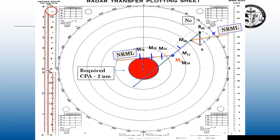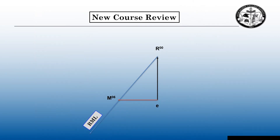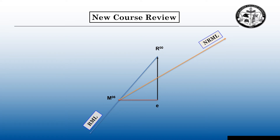Also, where that new CPA is would allow us to come back onto our original course. Here's a bigger picture of this course change: we're going to parallel or transfer our new relative motion line from MX to M06 and draw that new relative motion line out to starboard. With our compass, we're going to stab E and swing R00 to starboard where it touches that new relative motion line — that's our R prime. The original course was due north, E to R00. My new course is going to be E to R prime. I parallel that E to R prime to the middle of the plotting sheet to find out what that new course is.